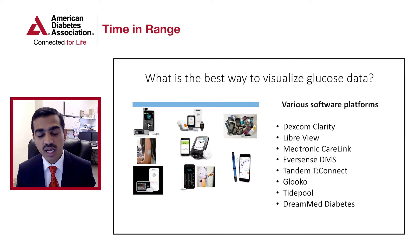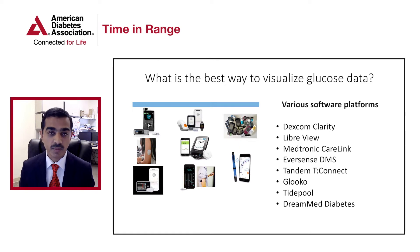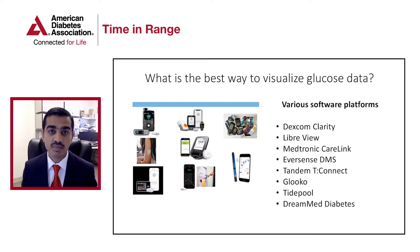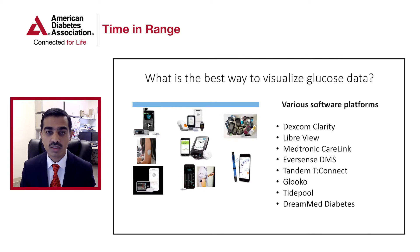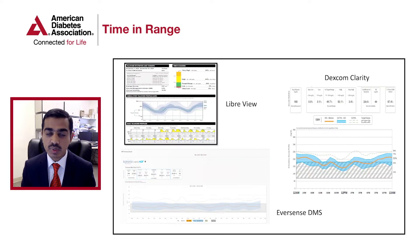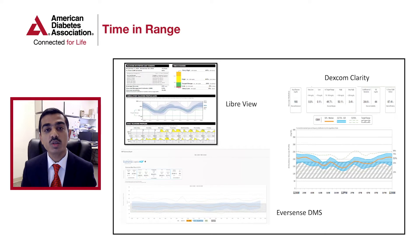What is the ambulatory glucose profile? There are many glucose meters out there in the market, four different types of CGMs, and three insulin pumps that integrate with CGMs. Each one of these used to provide data differently on their proprietary software or downloading platform, making it difficult for physicians and patients to understand glucose data across different CGMs, pumps, and glucose meters. To create a standardized way to look at and interpret glucose data, the international consensus experts came up with what is called the ambulatory glucose profile, or AGP.